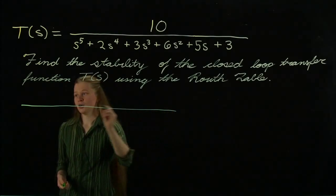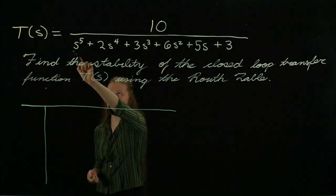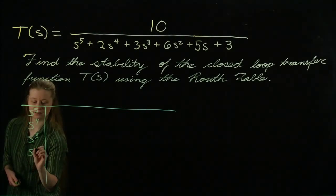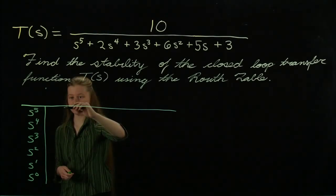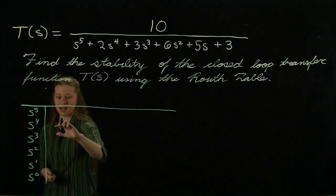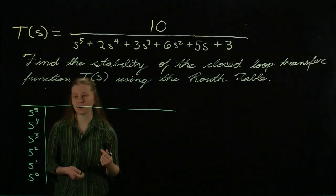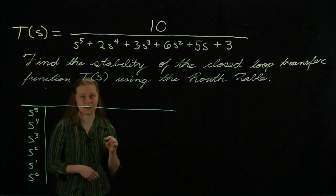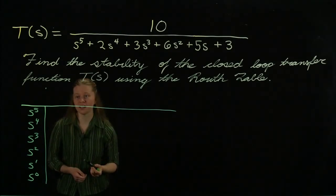With the Routh table, we have a number of rows equal to one more than the order of the polynomial on the denominator. So we have S to the fifth, S to the fourth, and so on. We determine values across the table, and once we look at the first column, we count the number of sign changes. For example, if we had positive, positive, positive, negative, positive, we would have two sign changes — from positive to negative, then negative to positive. That would mean two poles in our right-hand plane, making the transfer function unstable. So if we have no sign changes in that first column when we're done, then our system is stable.